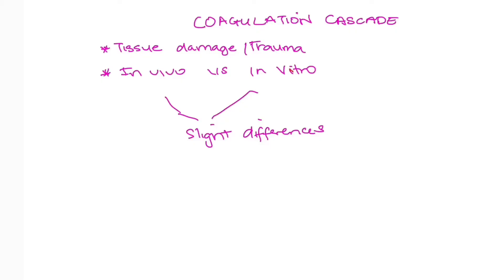Hello guys, welcome back to the DNN medical series. In today's video we'll be looking at the coagulation cascade. If you've ever researched the coagulation cascade, it looks like a really complicated process, but today we're going to break it down and make it simple. When you have any tissue damage or trauma, there's a need for making a clot.